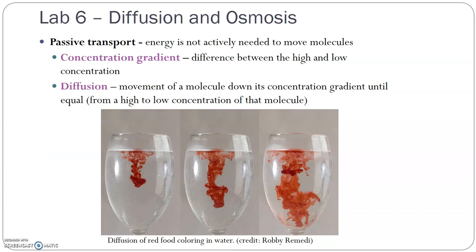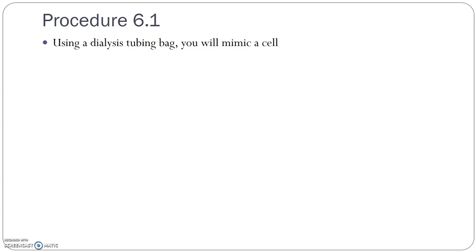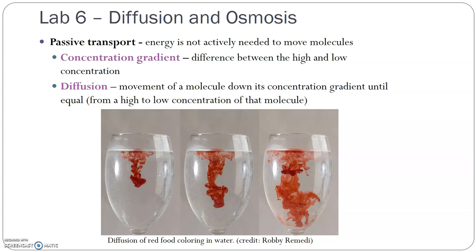So in the last video, we were talking about passive transport versus active. The experiments you're going to be running for this lab are all passive. You're going to start with diffusion, so the first thing I want to talk about is our diffusion procedure. Diffusion is the movement of a molecule from a high concentration to a lower concentration, like in the wine glass with drops of red dye that we looked at in the last video.